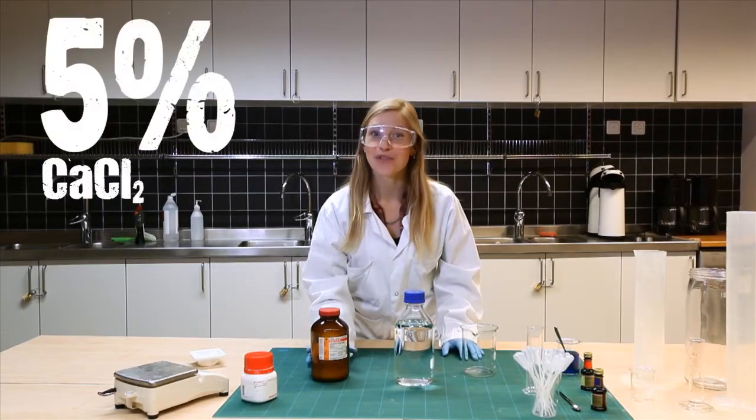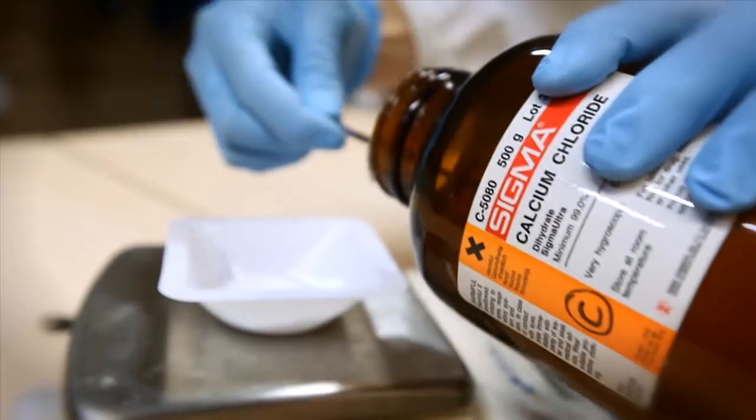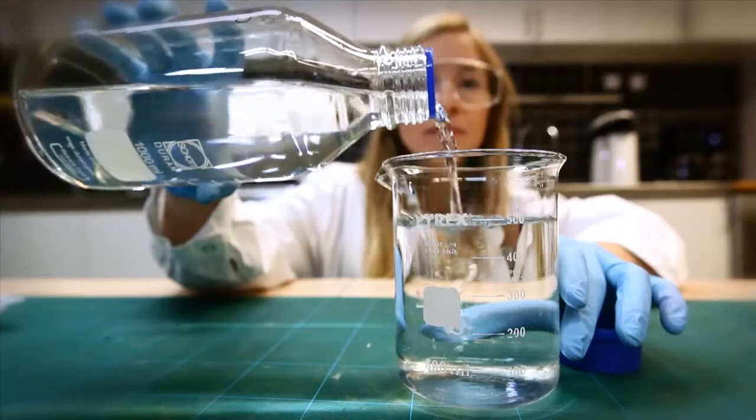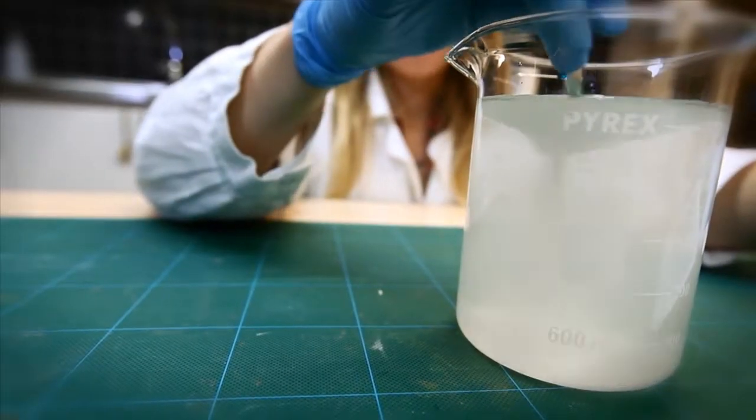Then we're going to make a 5% calcium chloride solution. I'll add 25 grams of calcium chloride to 500 milliliters of water. Just like before, stir until everything is dissolved.